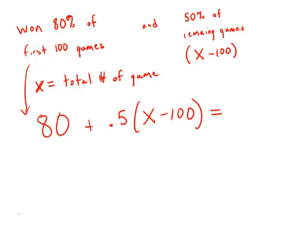And the total number of games that they've won has to equal 70% of X. So this gives us an equation we can solve for X. So 80 plus 0.5X minus 50 equals 0.7X.